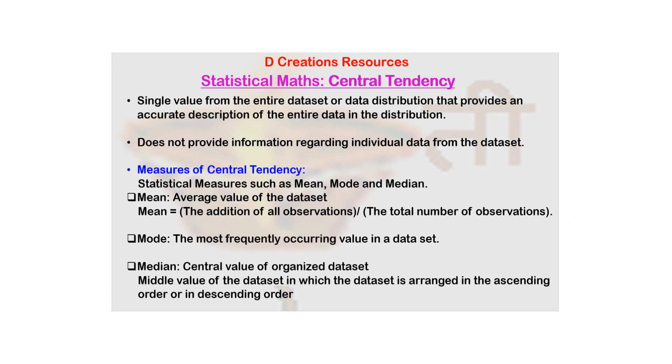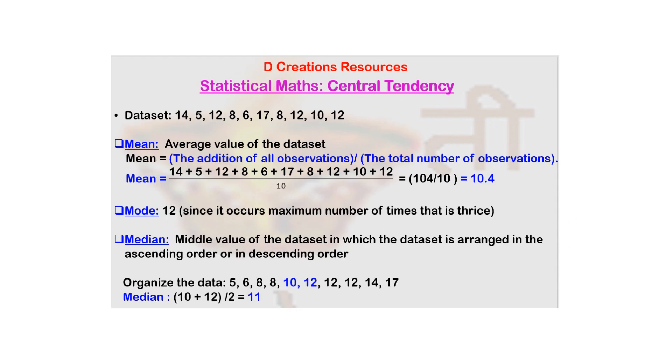So that is the idea of central tendency. Let us give an example so that you will understand it in a better way. So there are three measures of central tendency: mean, mode, and median. So let us look at this data. This is the data. Now each one of them, mean, mode, and median, is going to associate a single number for this entire data.